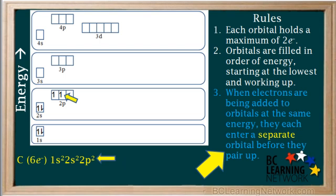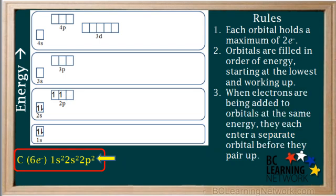Remember, rule number 3 states that when electrons are filling a set of orbitals with equal energy, new electrons will occupy single empty orbitals first before they start pairing up. A good analogy here is strangers sitting on a bus with three double seats together — people will usually sit separately, as long as there are empty seats, before they start pairing up. So carbon's configuration is 1s², 2s², 2p².